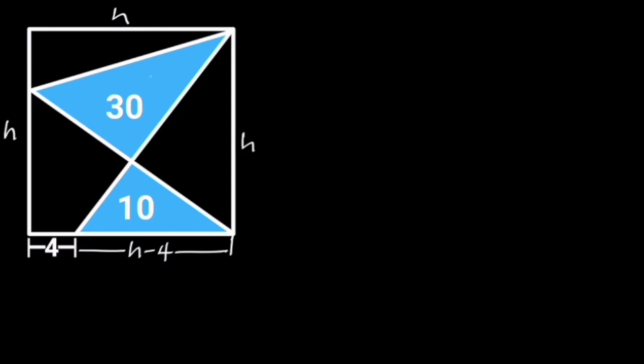To solve this problem, first let the side of the square be H. Since this length is 4 units, it follows that the remaining length will be H minus 4. Next, let the area of the shaded triangles be A1 and A2, and the area of this unshaded triangle be A3.